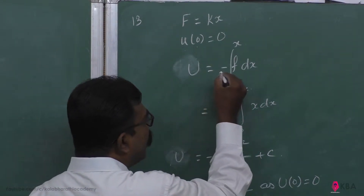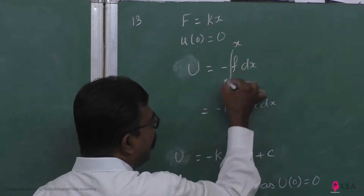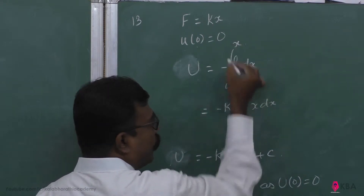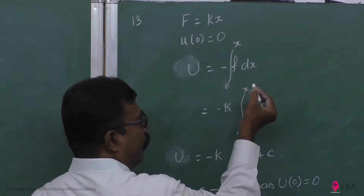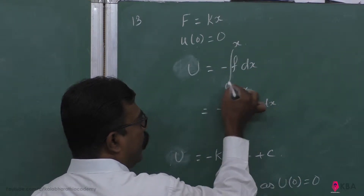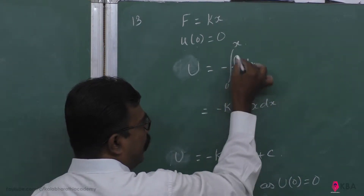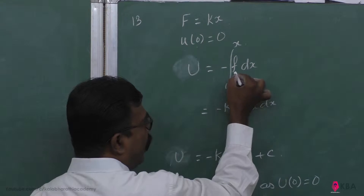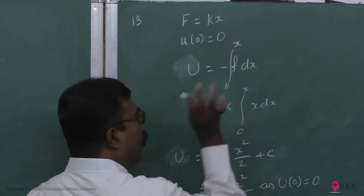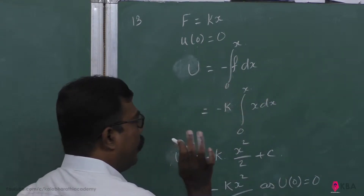Potential energy is minus F times dx. This is the minus integral of F times dx. This is the potential energy.